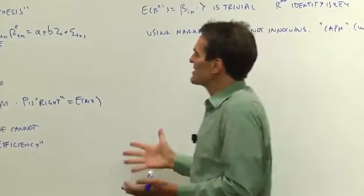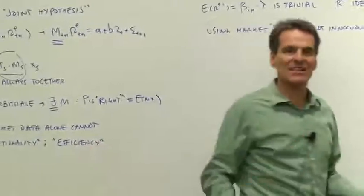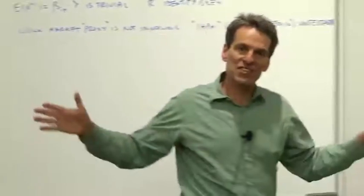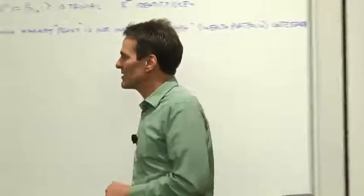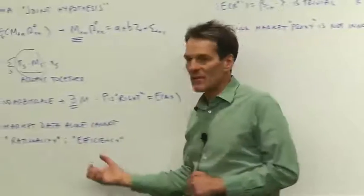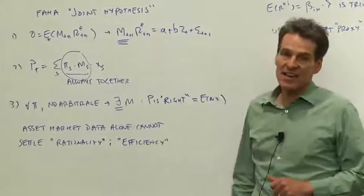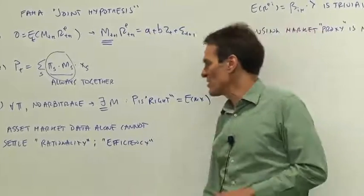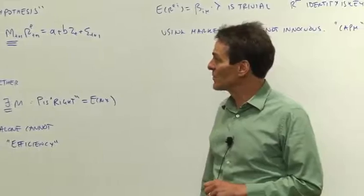An implication of this is there's nothing you can do on asset market alone to prove rationality or irrationality, so you need to introduce some information about what this discount factor is if you want to argue about rationality and efficiency and so on and so forth.